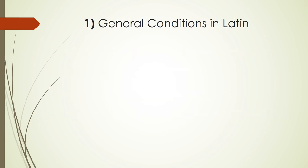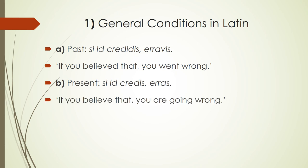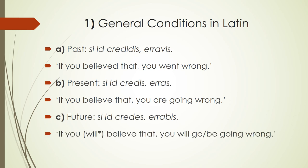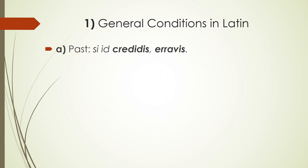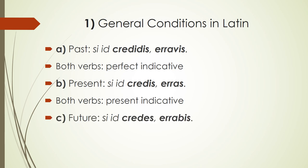If Latin wants to express a general condition concerning the past, it might say 'si id credidistis, erravistis' — if you believe that, you went wrong. In the present: 'si id creditis, erratis' — if you believe that, you are going wrong. And in the future: 'si id credes, errabis' — if you believe that, you will go wrong. For past general, we have two verbs in the perfect indicative; for present general, two verbs in the present indicative; for future general, two verbs in the future indicative.